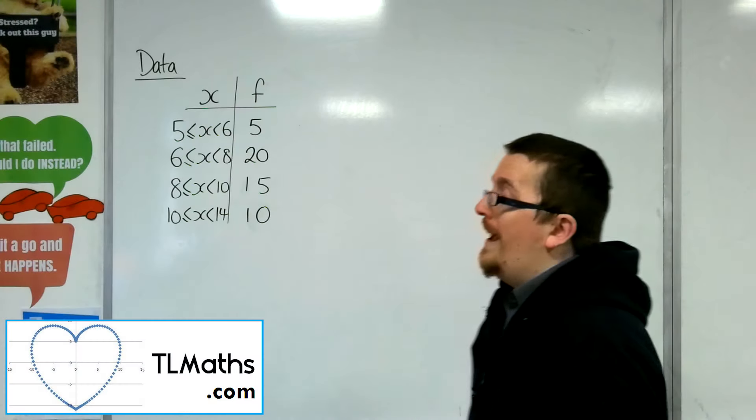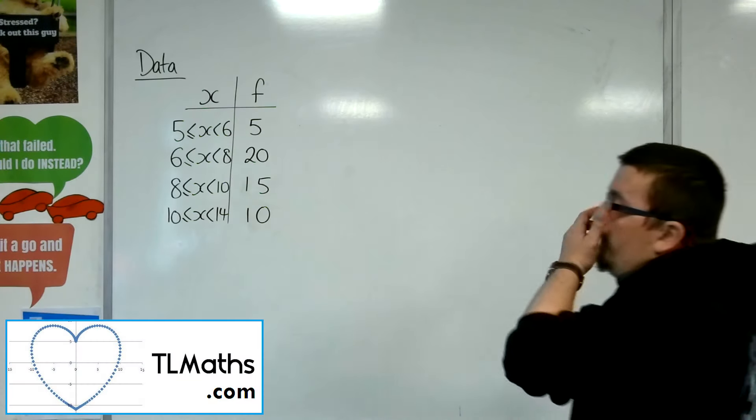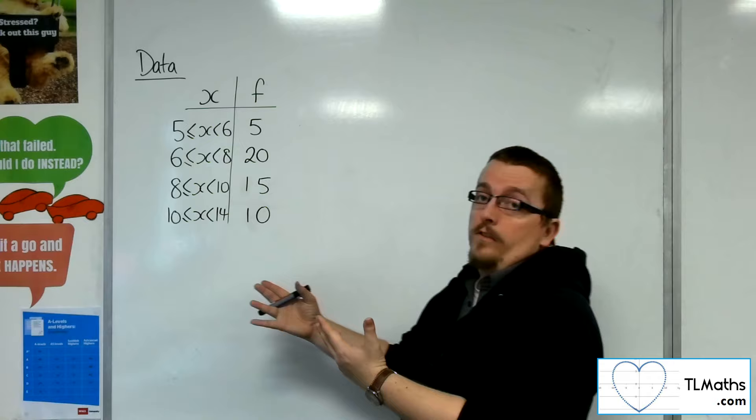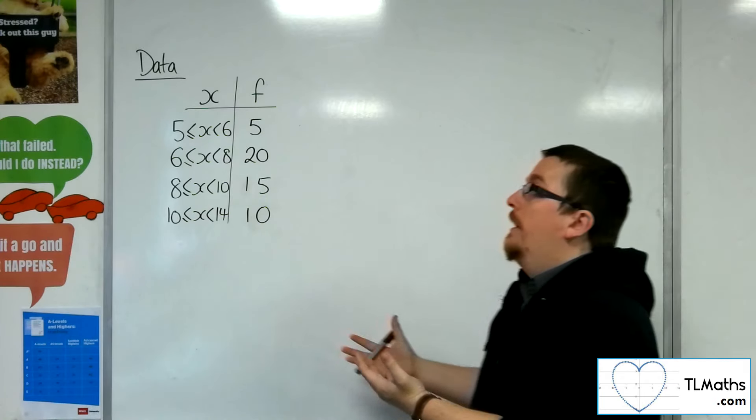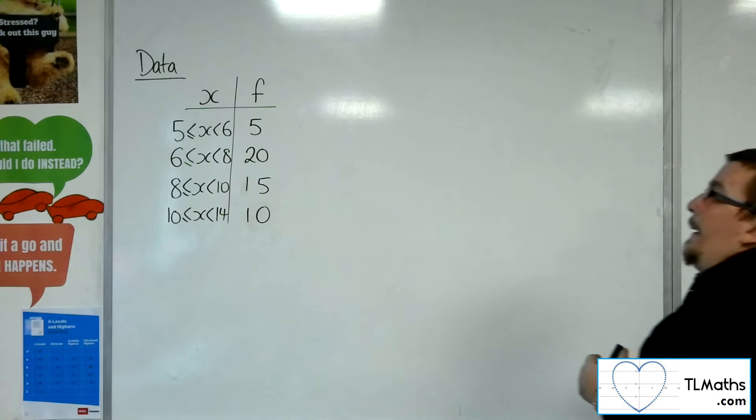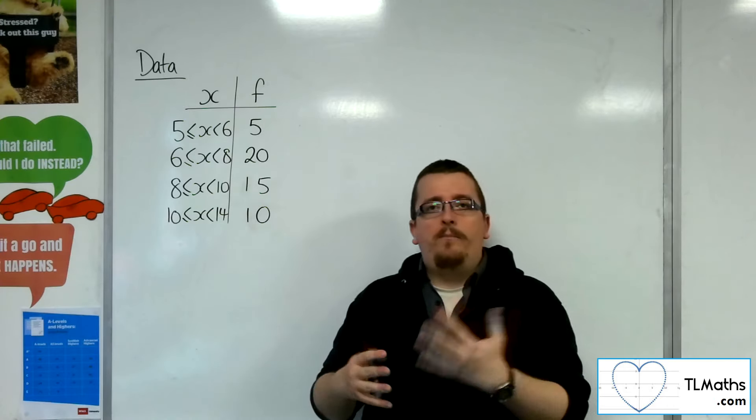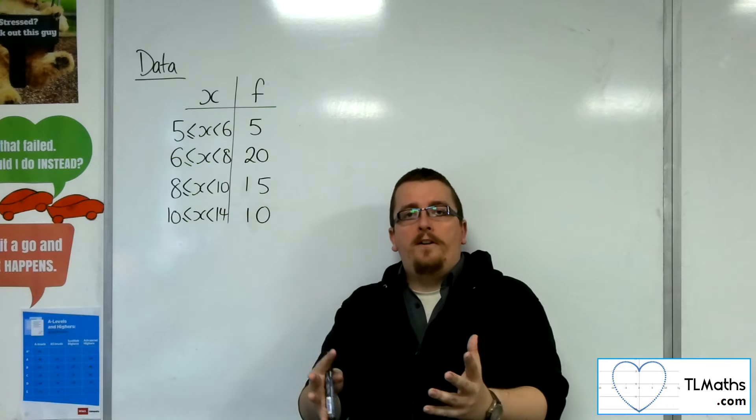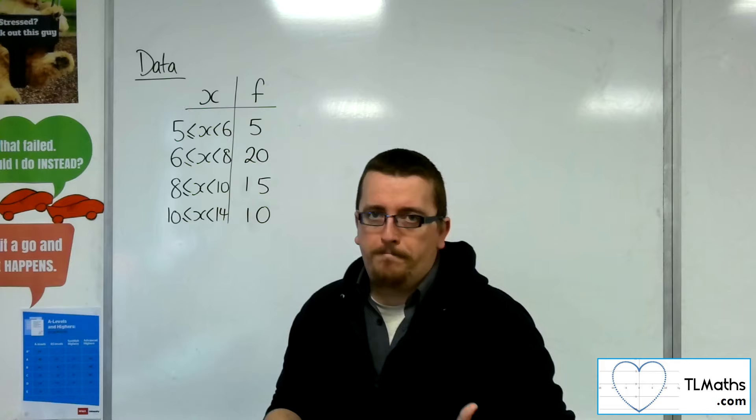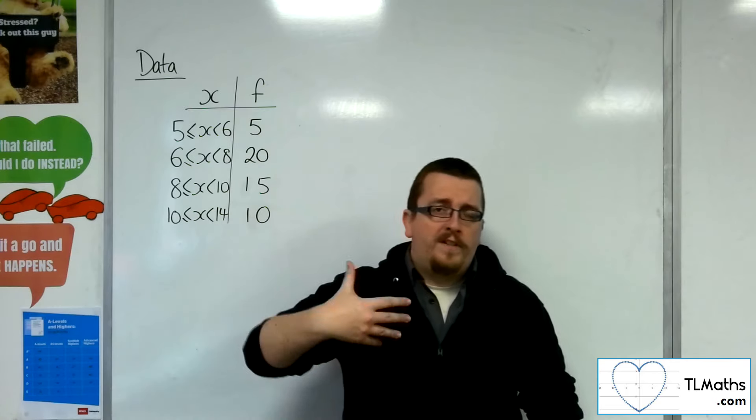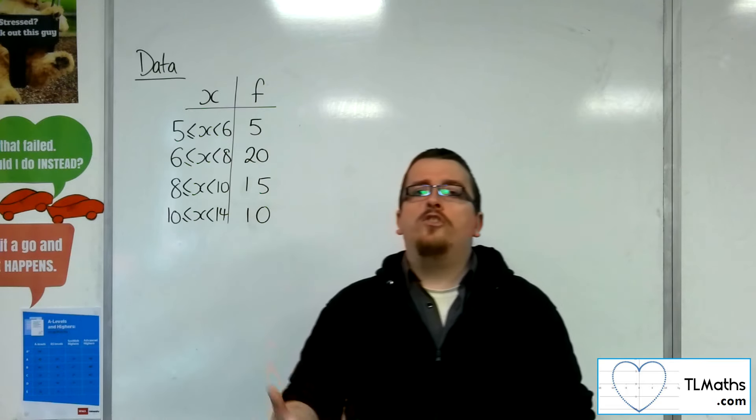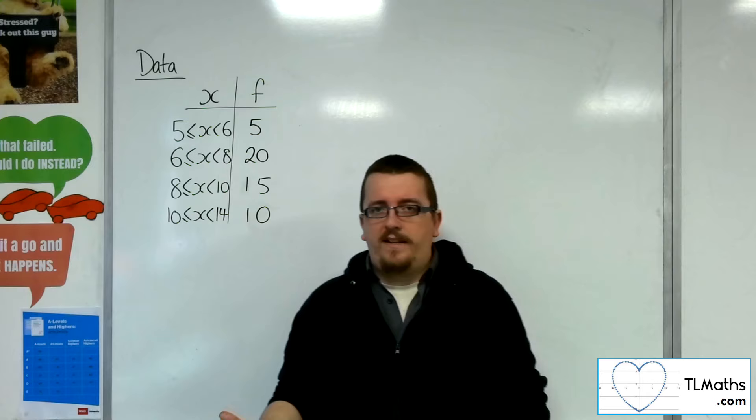Okay, so in this video we're going to look at histograms, and I'm going to work with the same data that we had for the cumulative frequency curve for convenience. The first thing I really want to explain is that histograms are like the bar chart for continuous data. So bar charts are for discrete data, histograms are for continuous data.